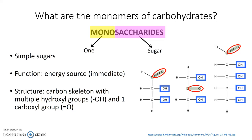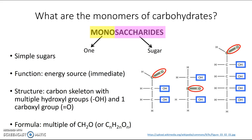If you want to know the formula of a monosaccharide, they all follow a consistent pattern. They all have a formula that's a multiple of CH₂O, or written as CₙH₂ₙOₙ — meaning that for however many carbons are in the molecule, there will be twice as many hydrogens and the same number of oxygens as carbons.